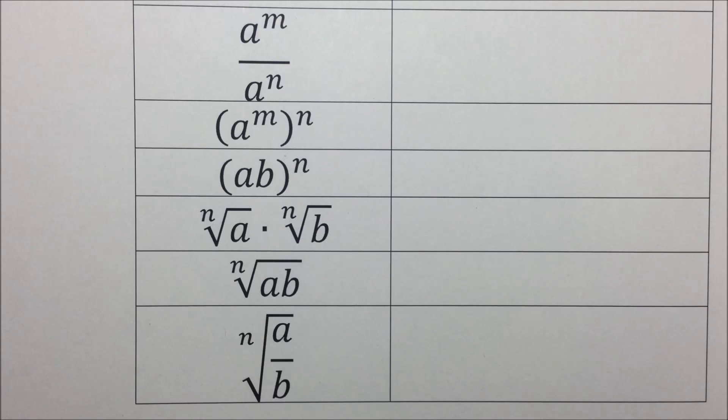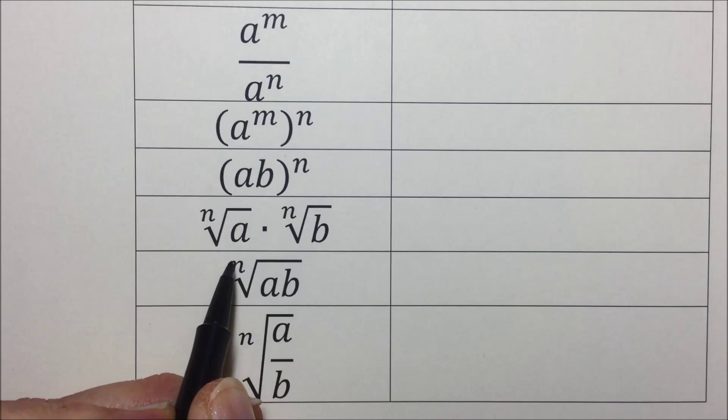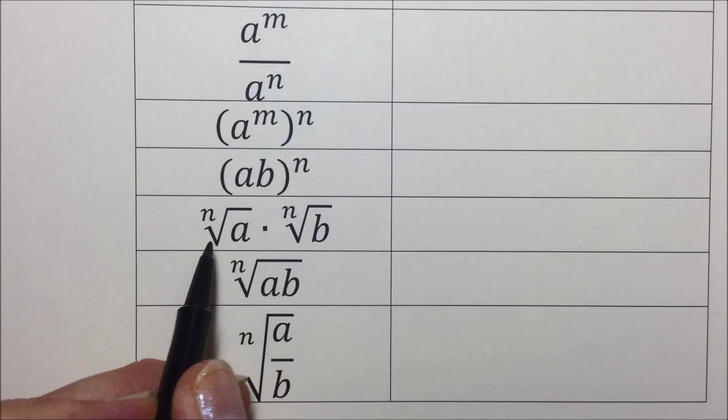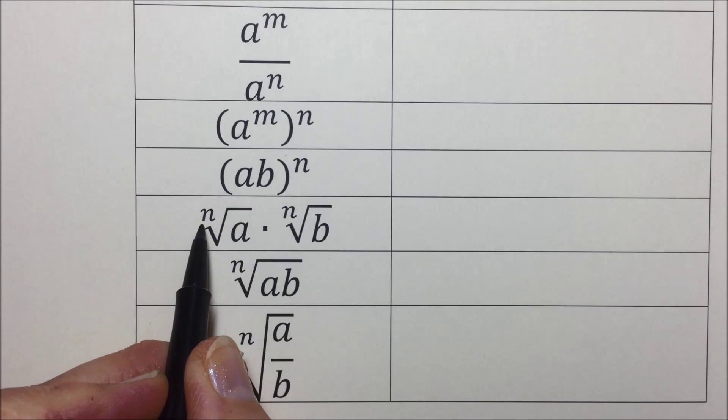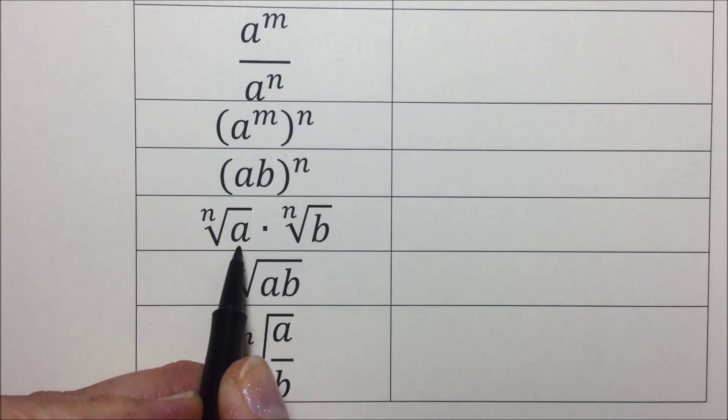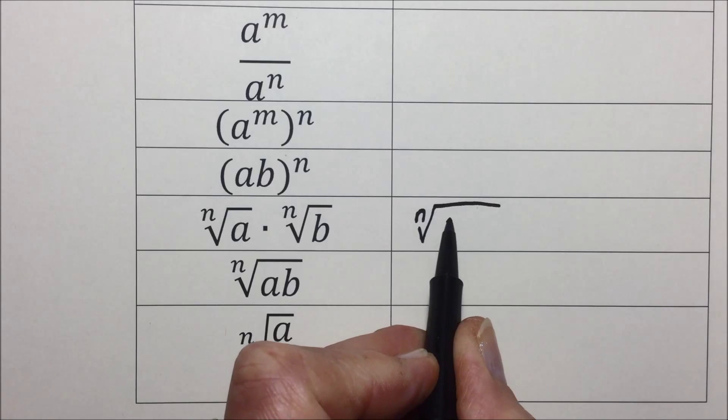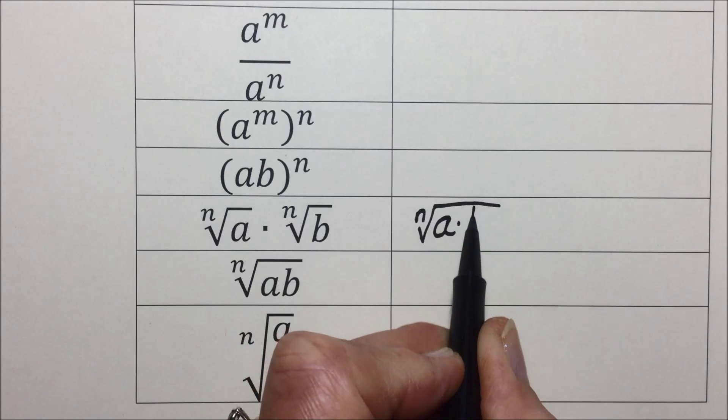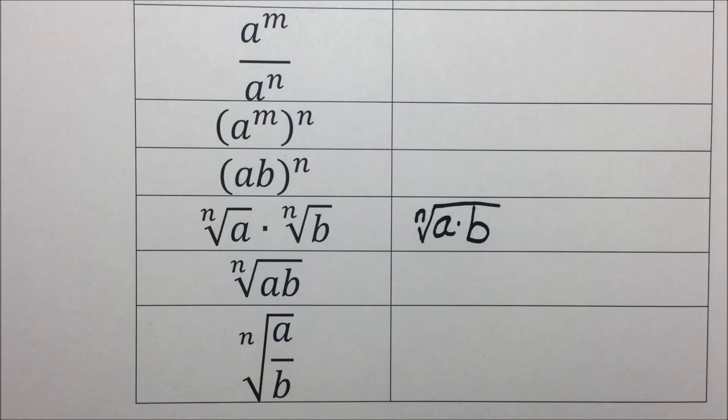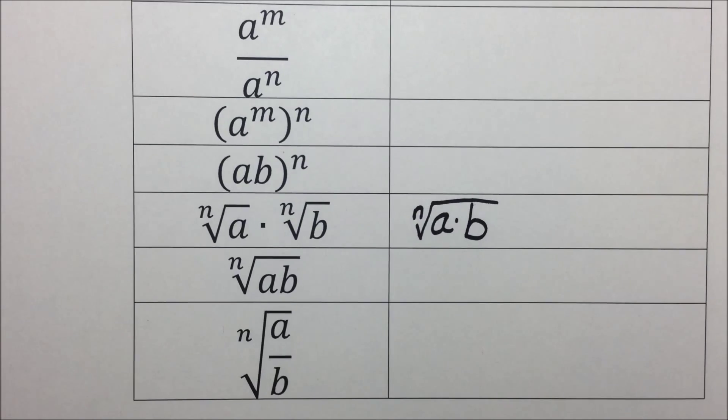Intermediate Algebra, Section 7.3, Multiplying Radical Expressions. The product of two nth roots is the nth root of the product of the two radicands. In other words, if we have the same index on our radicals multiplied together, we can take the nth root of the product of each of those two radicals. These are equivalent expressions.